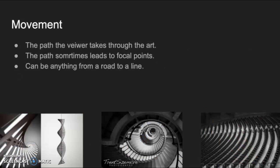Next, we have movement — the path the viewer takes through the art. The path sometimes leads to focal points, and it can be anything from a road to a line. As you can tell from the three examples we have here, they look similar, as the first and second one are just like a spiral staircase. And in the first image, it shows you what it looks like from a 3D perspective.